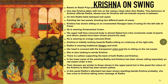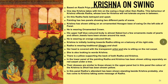Krishna is wearing an ornamental crown. His upper half blue-colored body is almost naked, but a few ornaments made of purple pearls and other jewels have been shown around his neck. He is wearing an orange colored dhoti. Krishna is initially looking towards Radha, sitting on a balcony on his right side. Radha is in typical Rajput costume, wearing traditional ghagra and choli. Her head is covered with a transparent odni, and she is sitting on a red carpet, also looking towards Krishna. There is a pillow or bolster supporting the back of both Radha and Krishna.